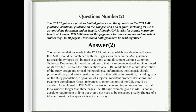In addition to a brief description of the study design and critical methodological information, the synopsis should provide efficacy and safety results, as well as other critical information including data on the study population, disposition of subjects, important protocol deviations, and treatment compliance. Cross-references to other sections of the CSR should be avoided. Complex or large and important studies may call for a synopsis longer than three pages; the 10-page example given in M4E is not an absolute limit. Use of a tabular format for the synopsis is not mandatory.